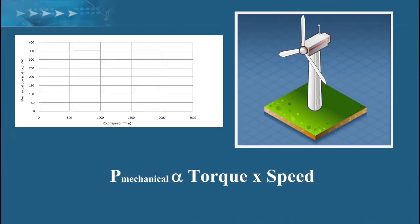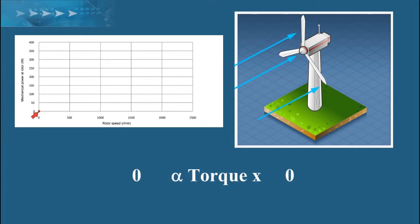When there is some wind but not enough to make the blades turn, torque is applied on the generator's shaft. But even if there is torque, if the speed is zero, the generator doesn't receive any mechanical power.